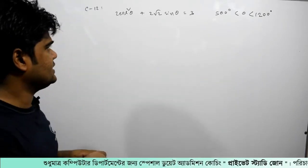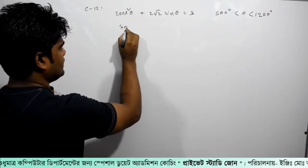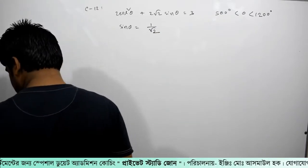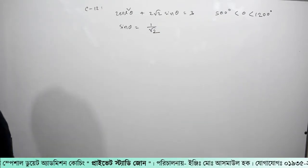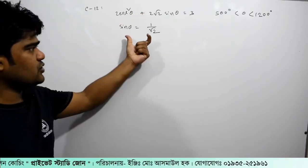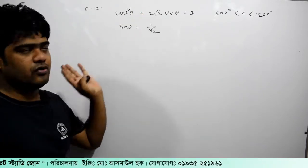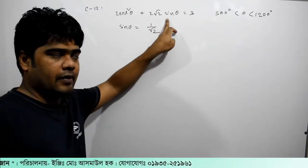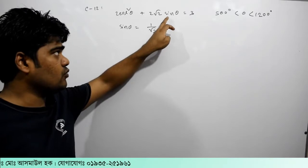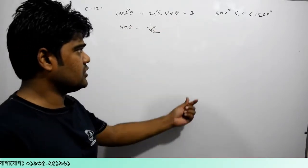So we have one number. We will do the calculation of sin theta equal to 1 by root 2. We will see that sin theta is equal to 1 by root 2. We will do our calculation — sin theta equal to 1 by root 2.